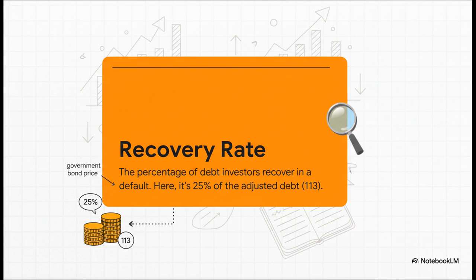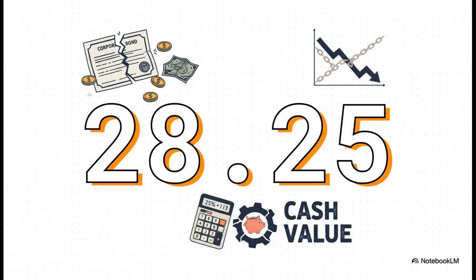And that's where our government bond comes in. That $113 price? That's our benchmark for the full risk-free value. So if the company goes under, investors get 25% of $113. Do the math, and that comes out to exactly $28.25. This is the payout in the bad scenario. Remember that number.